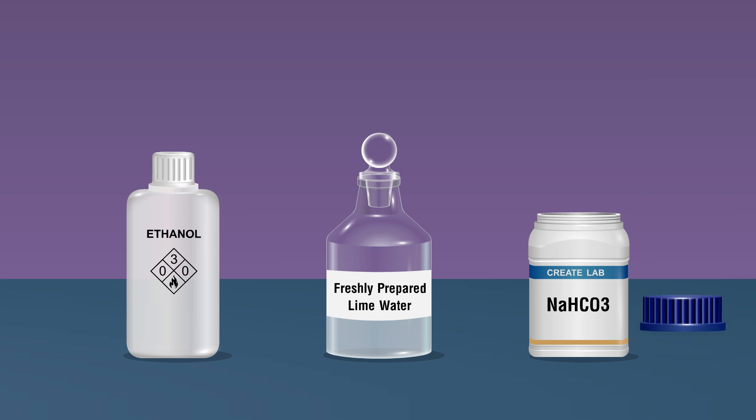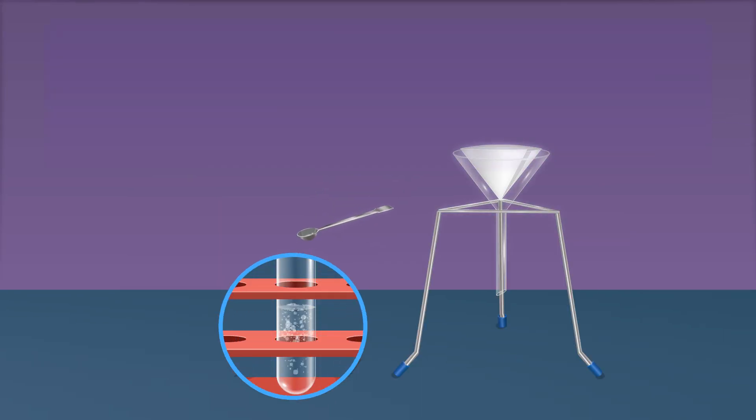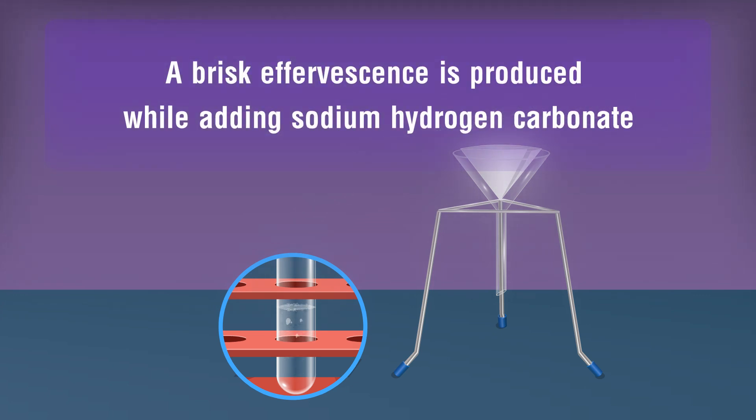Then add a pinch of sodium hydrogen carbonate NaHCO3 using a spatula into the boiling tube containing the filtrate. A brisk effervescence is produced while adding sodium hydrogen carbonate.